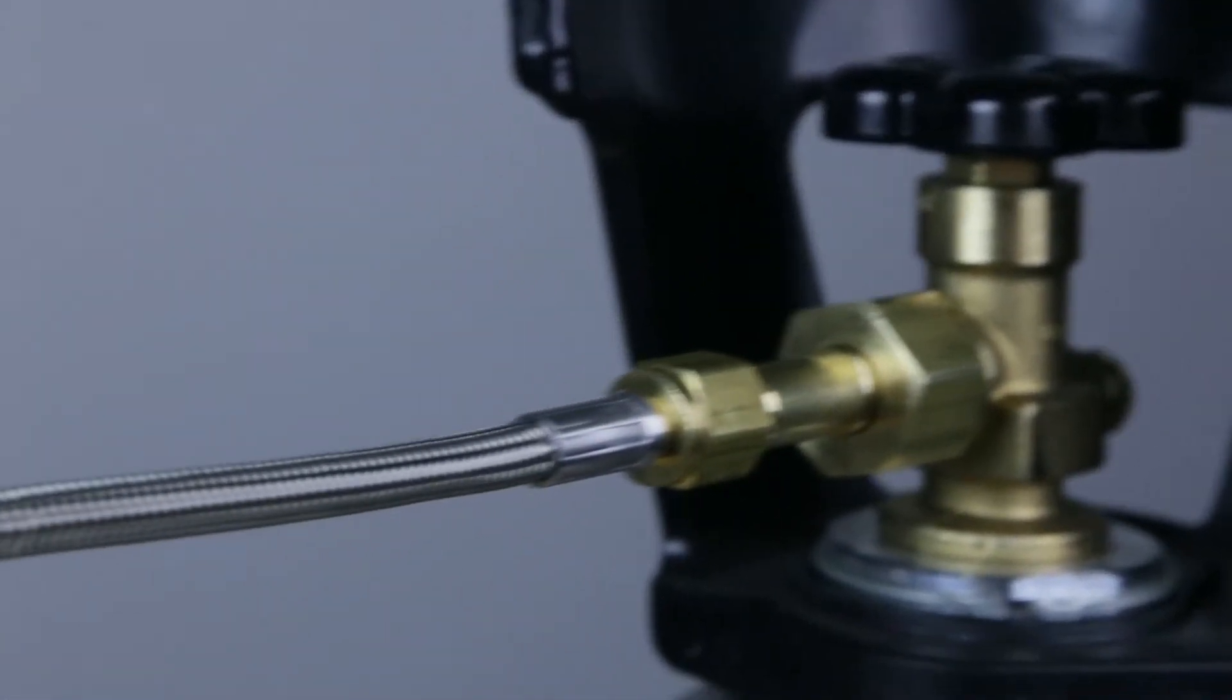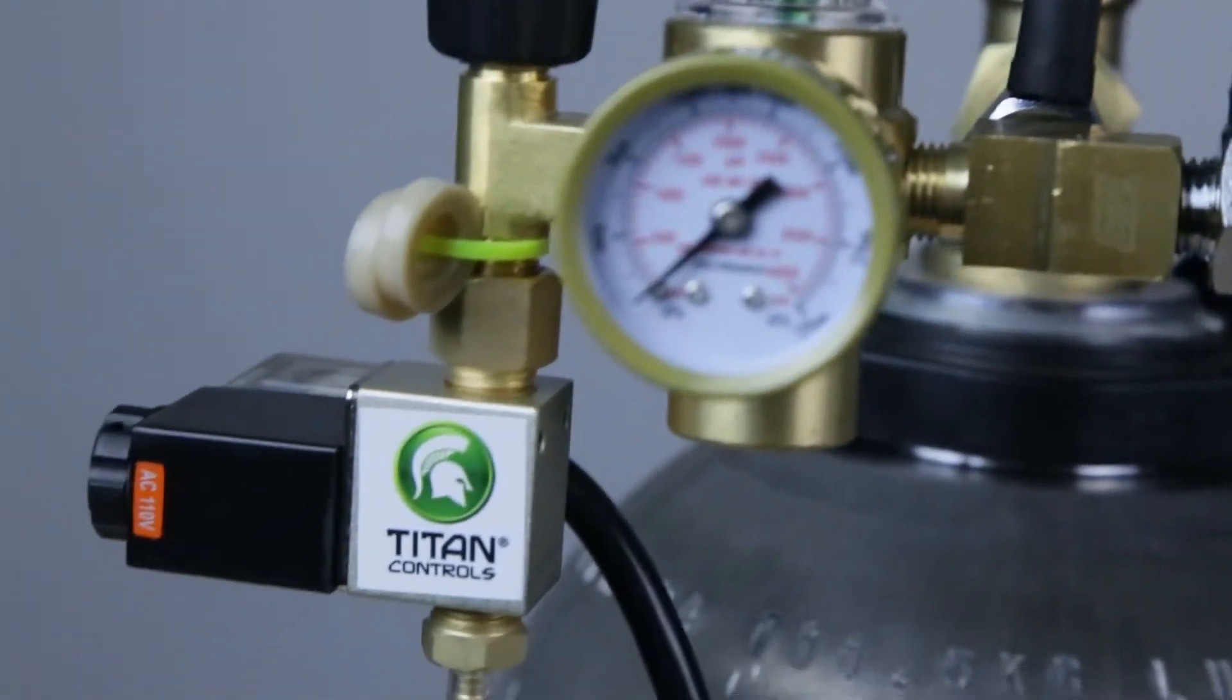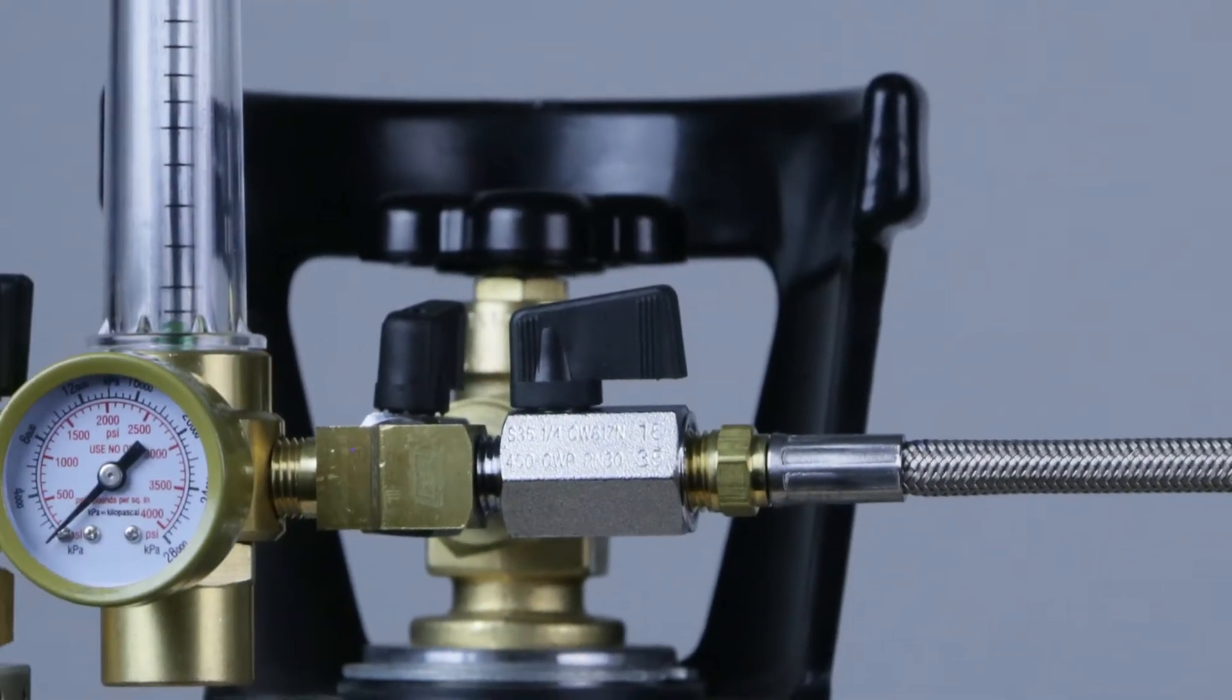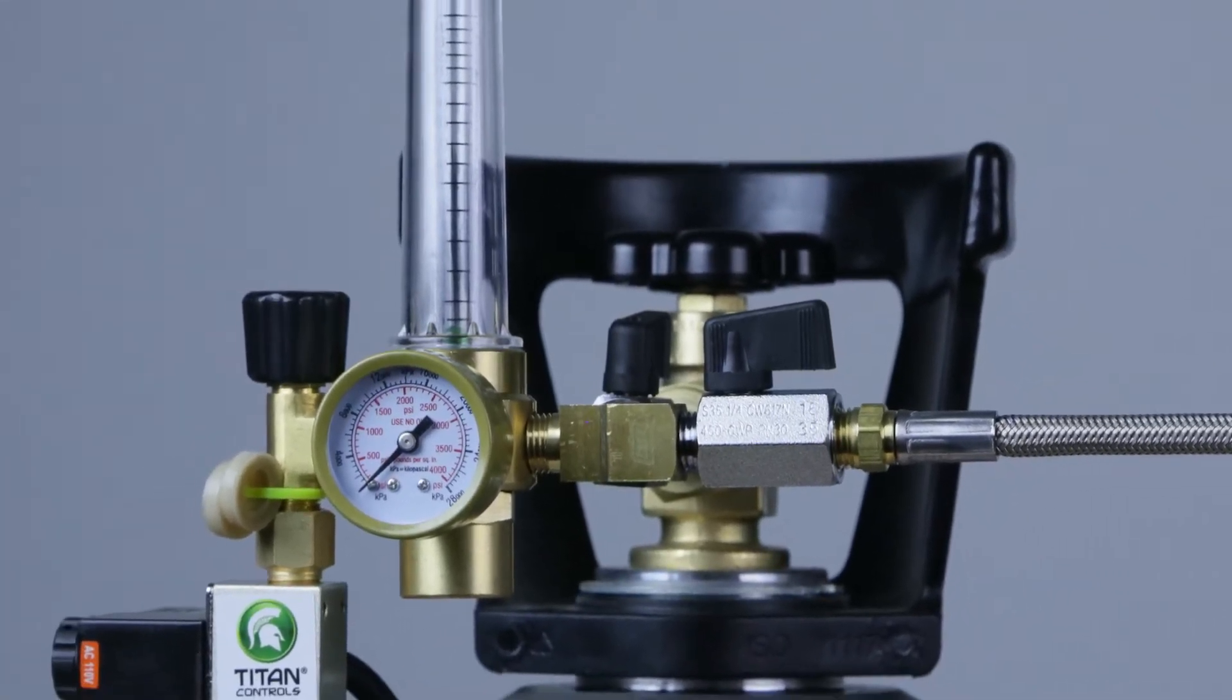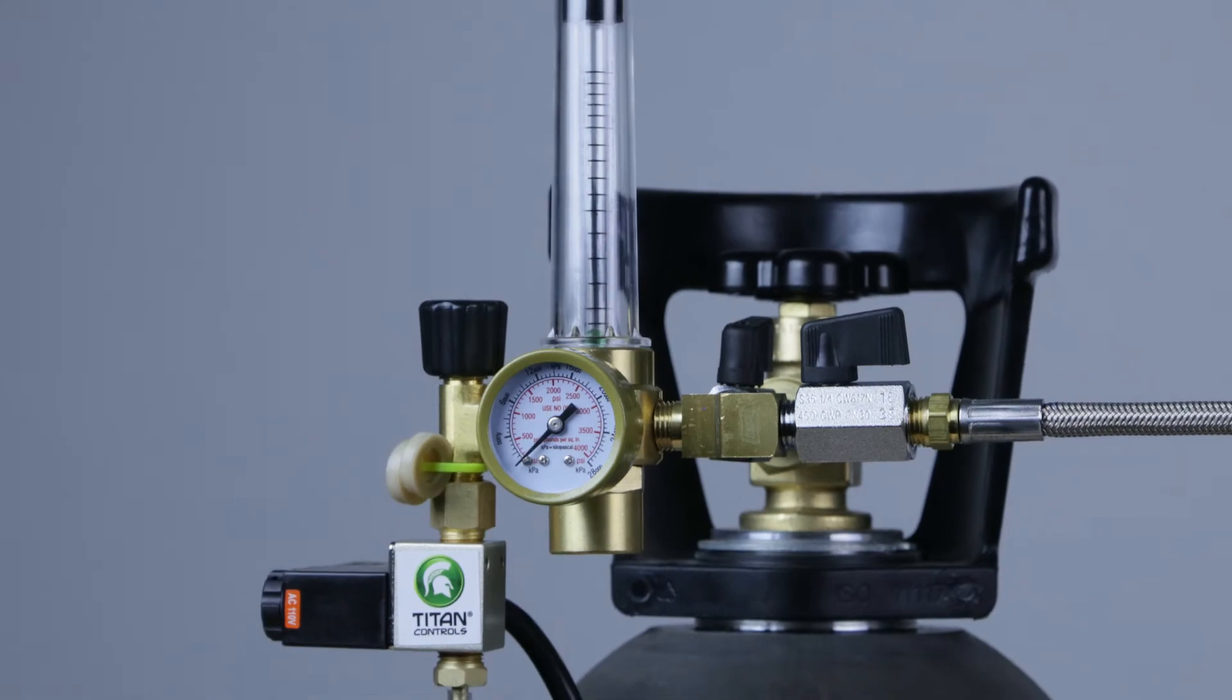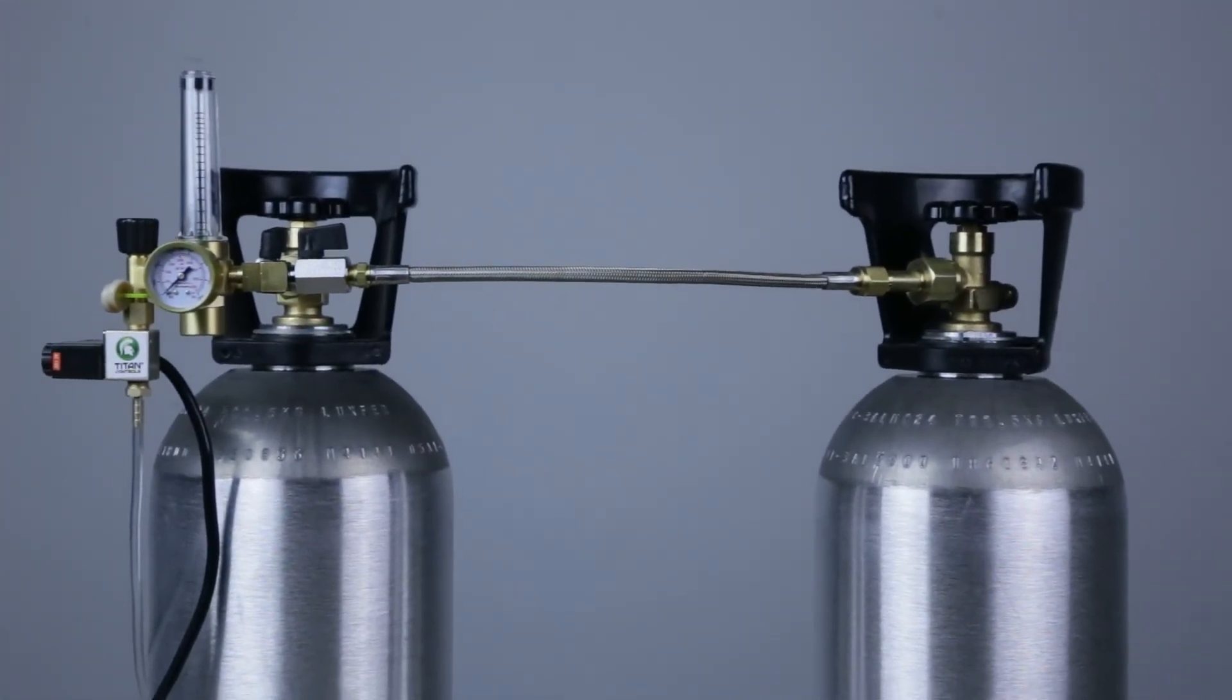Titan Controls two-tank CO2 regulator system with shutoff valves is something growers have been asking for and we are proud to offer. Constructed Titan Tough using premium components, you'll be making fewer trips to your local shop for CO2. And growers from coast to coast agree, two tanks are better than one.